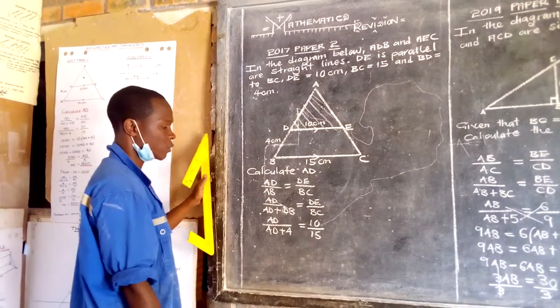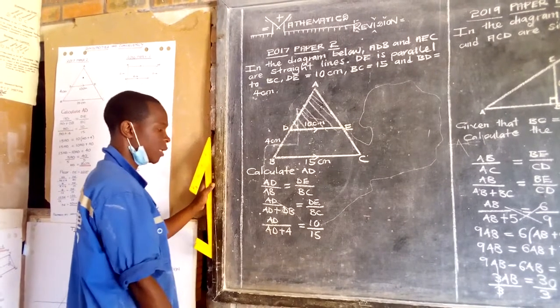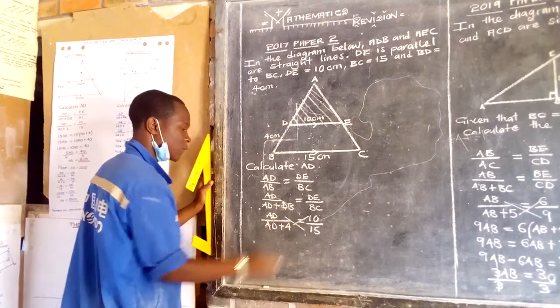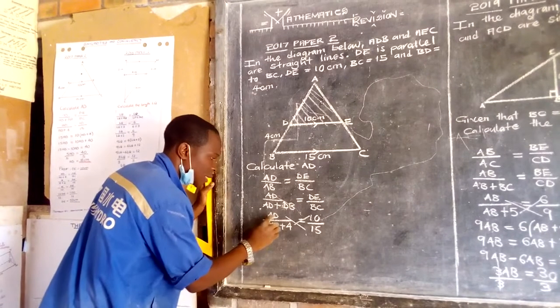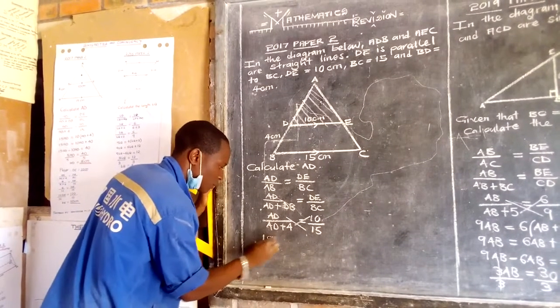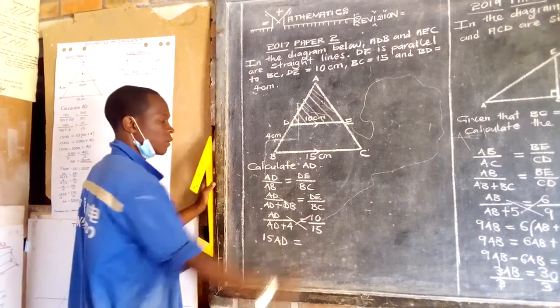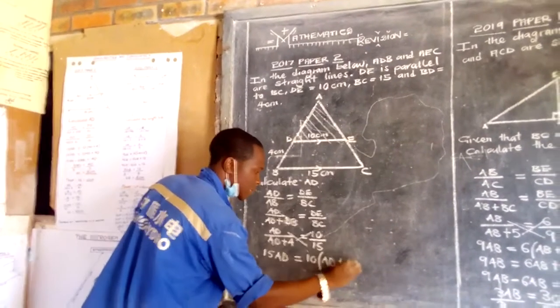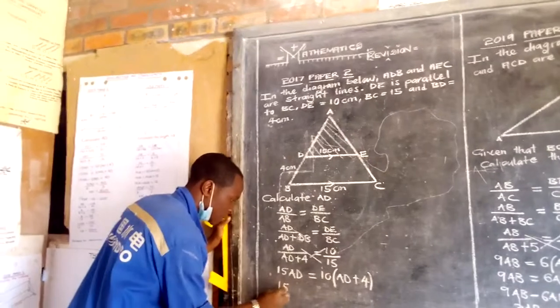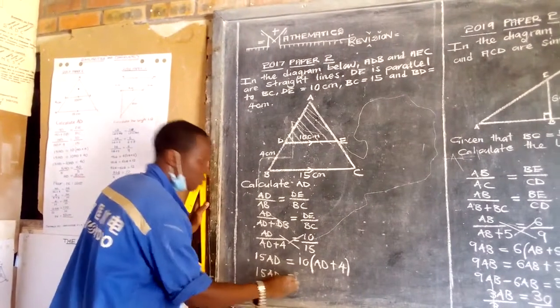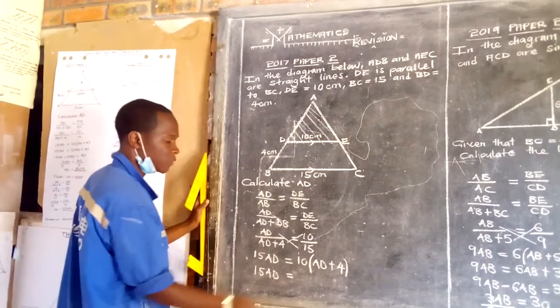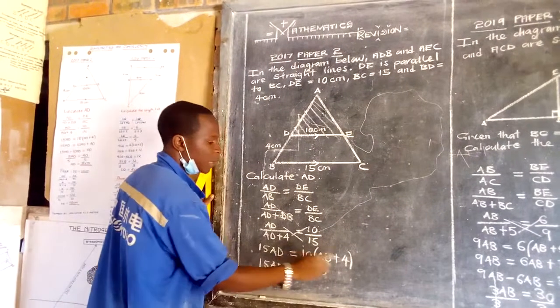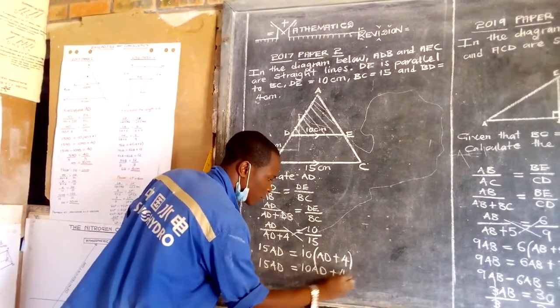Now it is at this level where you now cross multiply. You adopt cross multiplication. Meaning you are going to multiply AD by 15, then 10 by AD plus 4. So I am saying 15 AD is equal to, I am multiplying 10 by AD plus 4. You maintain 15 AD is equal to 10 times AD, then plus 10 times positive 4, which is positive 40.